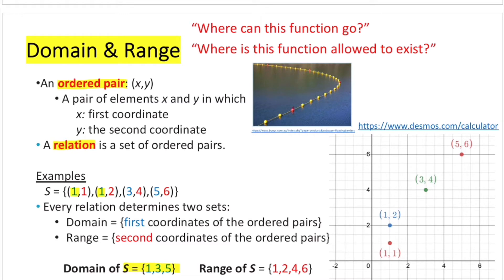What about the range? The range refers to the second coordinates of each of the ordered pairs. I used red to color code all the second coordinates in this relation. So the range is 1, 2, 4, and 6 — corresponding to all the second coordinates of the ordered pairs. On the right-hand side you can see a graph representing this relation, with all ordered pairs plotted. The domain refers to all the x values: 1, 3, and 5.